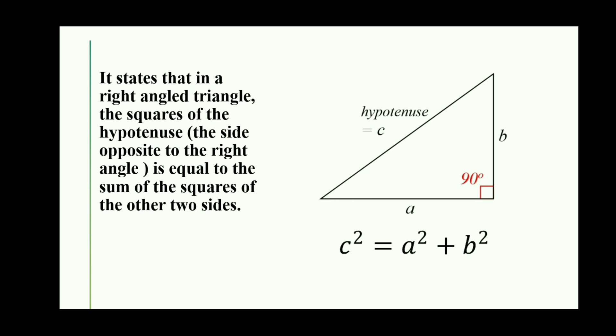It states that in a right angled triangle, the square of the hypotenuse (the side opposite to the right angle) is equal to the sum of the squares of the other two sides.